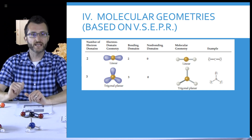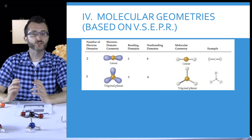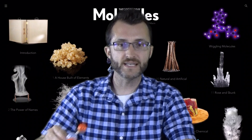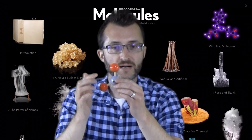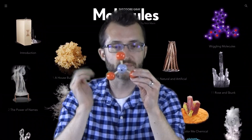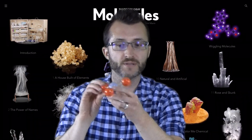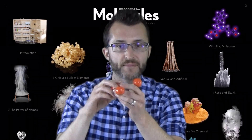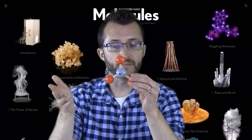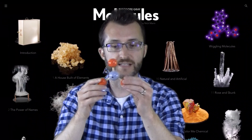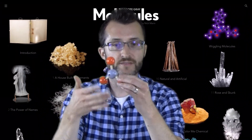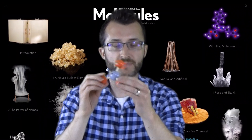Continuing on, we have something called trigonal planar. BF3 — boron is stable with 6 valence electrons so it can bond to 3 things. This makes a flat triangle, thus the name trigonal planar — it's a flat plane. Label this molecule as nonpolar. We have no unbonded pairs on the central atom. No dots — nonpolar!